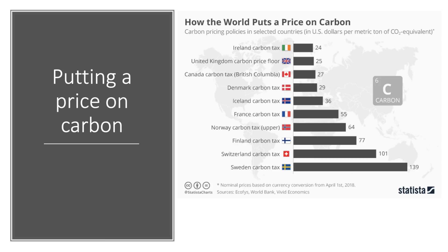The second option is carbon trading — similar to carbon taxation in the sense of putting a price on carbon. This graphic shows countries with the highest carbon taxes in the world. A number of countries have introduced carbon tax as part of their climate change strategy. The best example is Sweden, with a carbon tax of about $140 per metric ton of carbon. Switzerland is not far behind, and the UK has a minimum carbon price of around $25 — about 18 euros per ton.